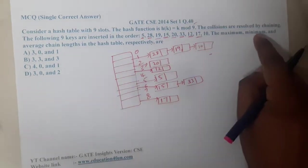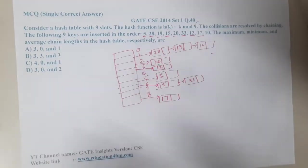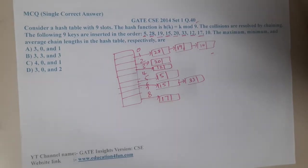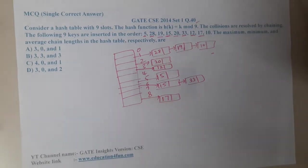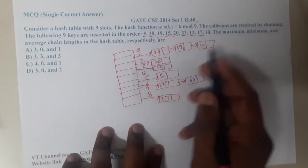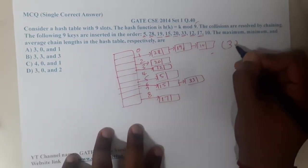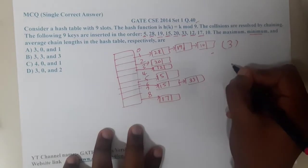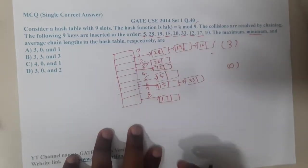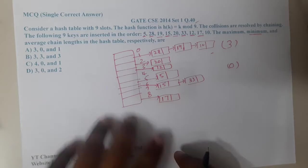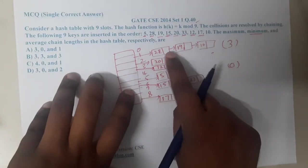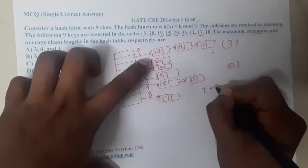Now the question is, what is the maximum, minimum, and average chaining length? This is an interesting question. What is the maximum chaining length? At 1, we are having the maximum of 3. What is the minimum? Minimum will be 0 because there are few nodes where it is 0.